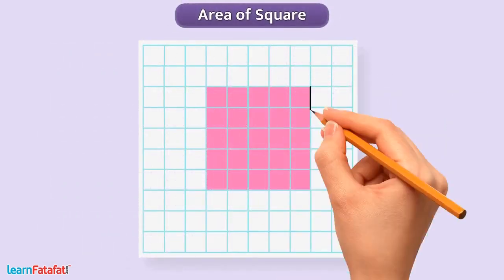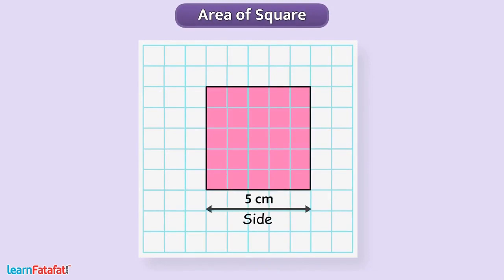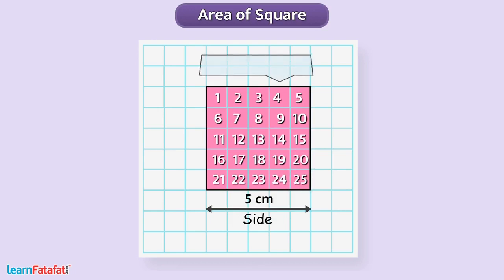Now, here is a square of side 5 cm. Can you find its area? Yes. The square of side 5 cm covers a total of 25 squares on the square grid. That means, the area of this square is 25 square centimeter.